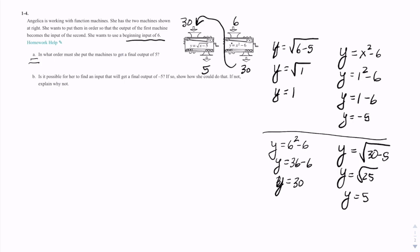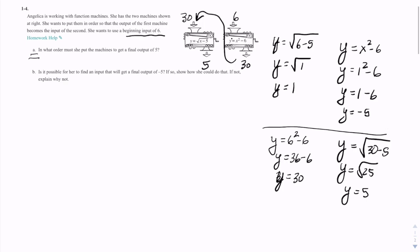Question A says, in what order must we put the machines? So the answer for A, if we were going to write the answer down, would be first y equals x squared minus 6, followed by y equals the square root of x minus 5.